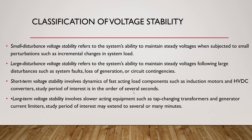Number four is long-term voltage stability, which involves the dynamics of slower-acting equipment such as tap-changing transformers — where changing the number of turns takes a larger time — and generator current limiters, which represent field current limiters. These two types of equipment have a large time constant, meaning the period of interest may extend to several or many minutes. So long-term versus short-term depends on the time constant of the equipment.